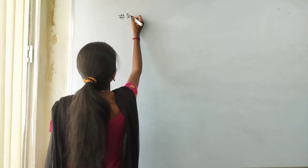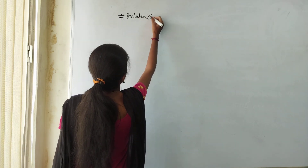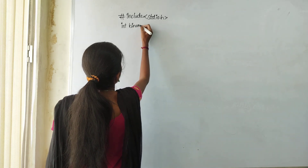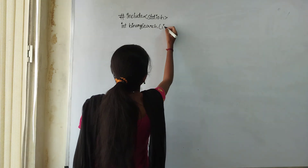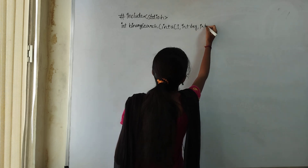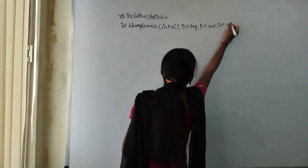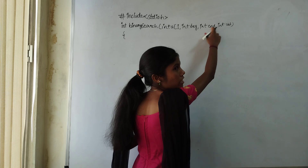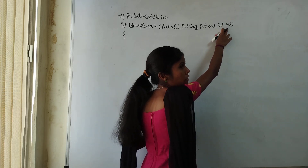Write down a C program for binary search. You need to search for one element and find which index position it is present in, using the binary search algorithm. Write the program and explain each and every line of what you are writing.